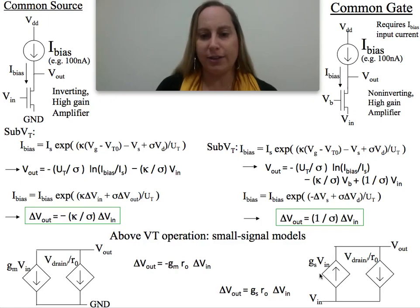For the common gate case, again, the gate is held fixed, so that current source goes away. So now I'm only left with two current sources, one which is Gs, Vin, and one which is V drain over R0. And if I simply write KCL at this node, these two currents have to be equal, and I get that the change in the output voltage is GsR0 times delta Vin. And again, if I remember from subthreshold cases for basic structures, it's going to be 1 over sigma. So everything stays consistent.